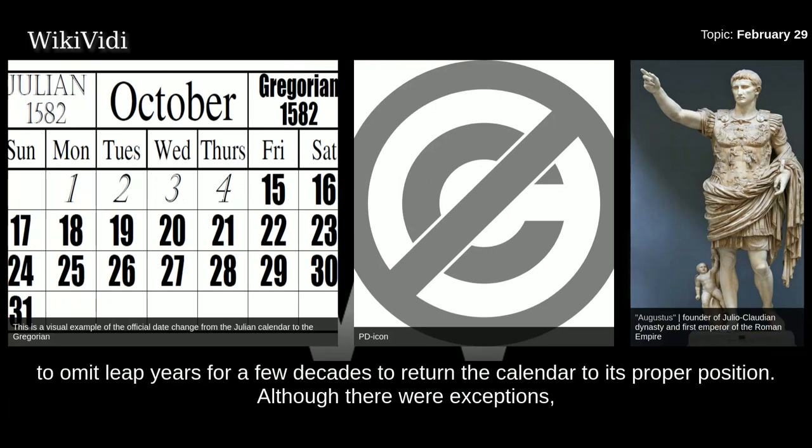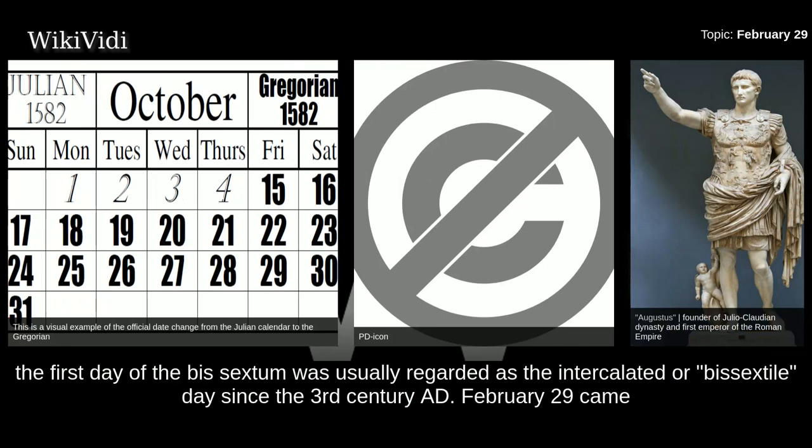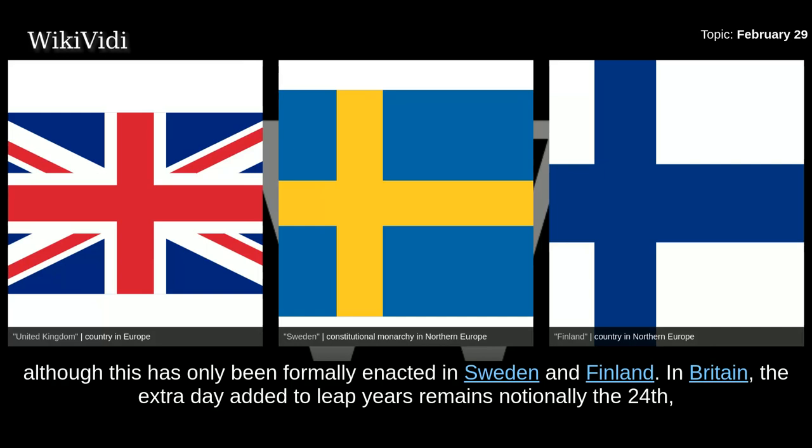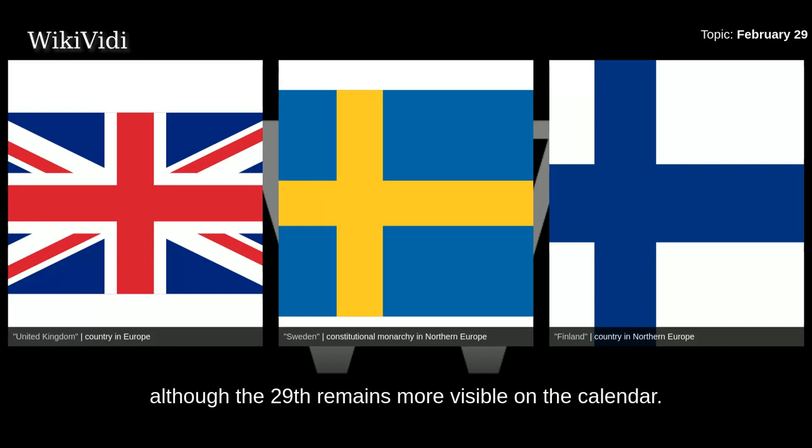Although there were exceptions, the first day of the bis sextum was usually regarded as the intercalated or bis sextile day since the 3rd century AD. February 29th came to be regarded as the leap day when the Roman system of numbering days was replaced by sequential numbering in the late Middle Ages, although this has only been formally enacted in Sweden and Finland. In Britain, the extra day added to leap years remains notionally the 24th, although the 29th remains more visible on the calendar.